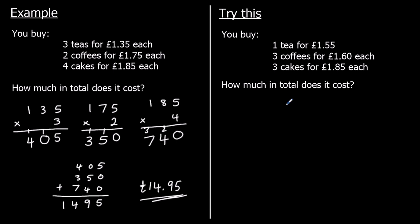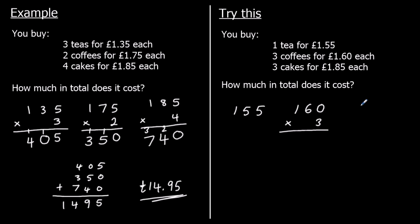One for you to try. We've got one tea at £1.55, three coffees at £1.60 each, and three cakes at £1.85 each. So we'll do 155p × 1, 160p × 3, and 185p × 3.